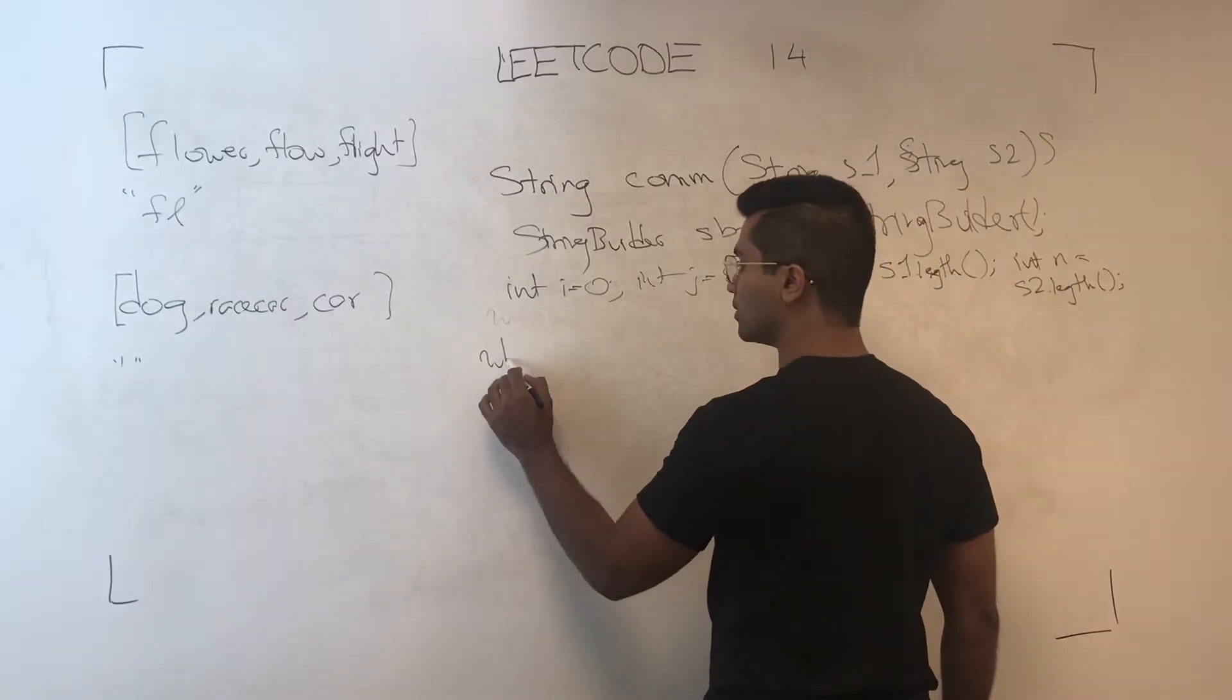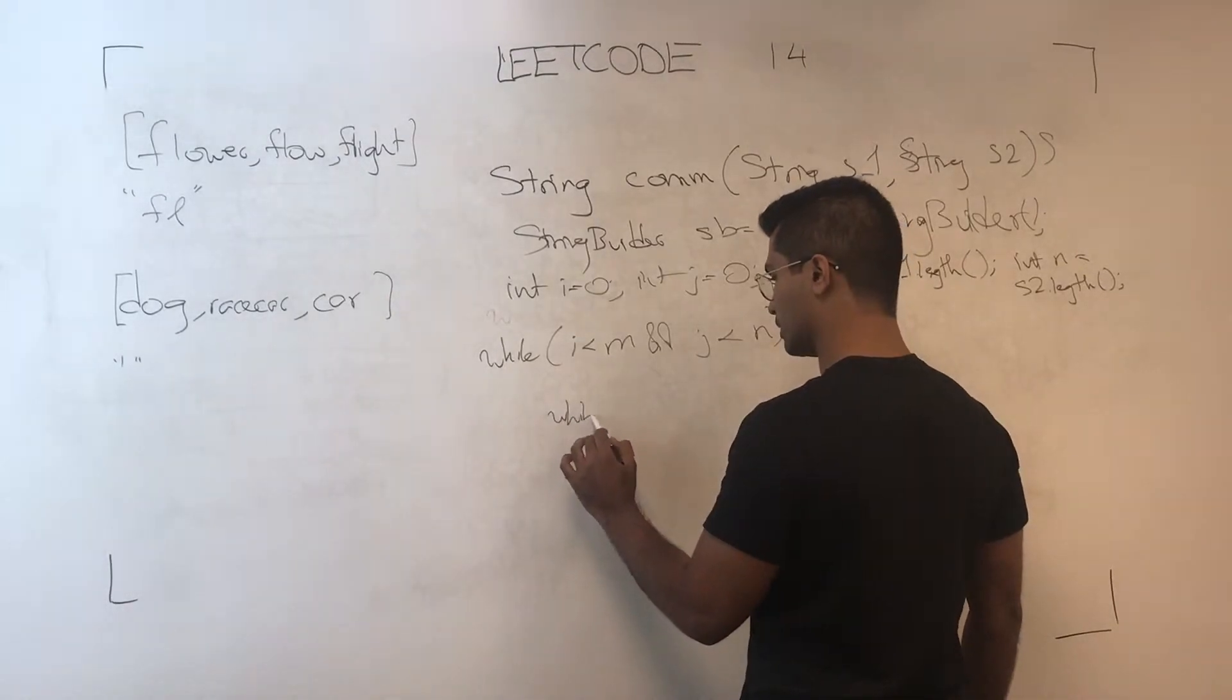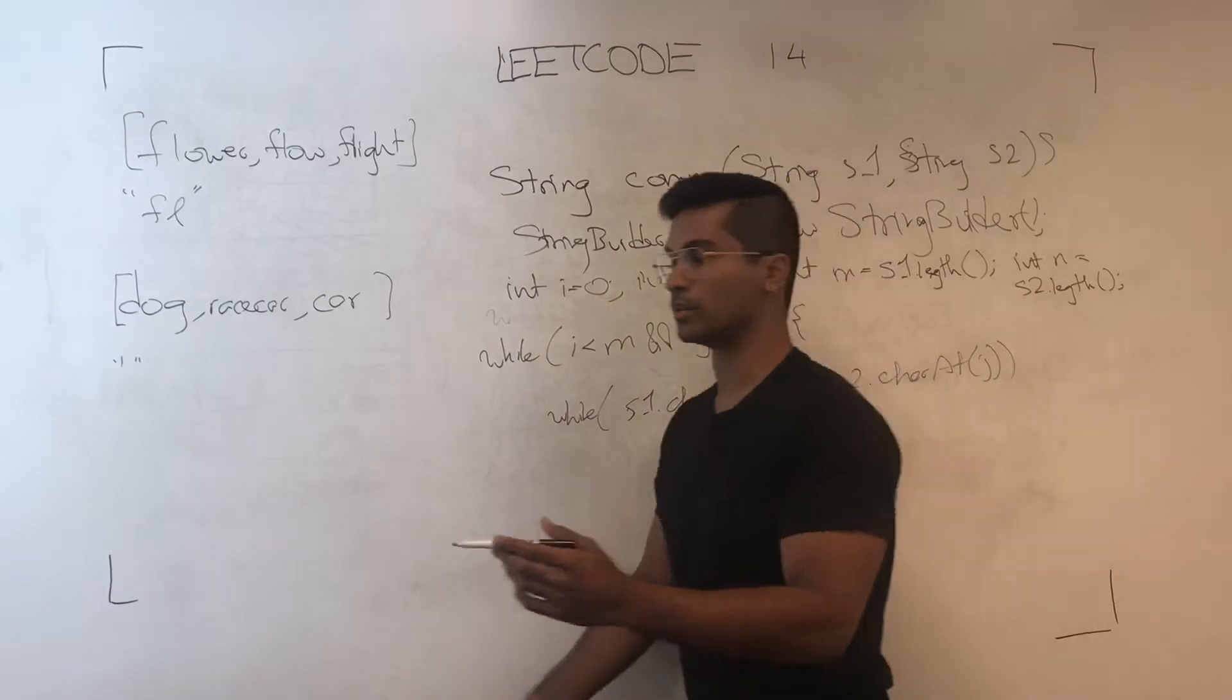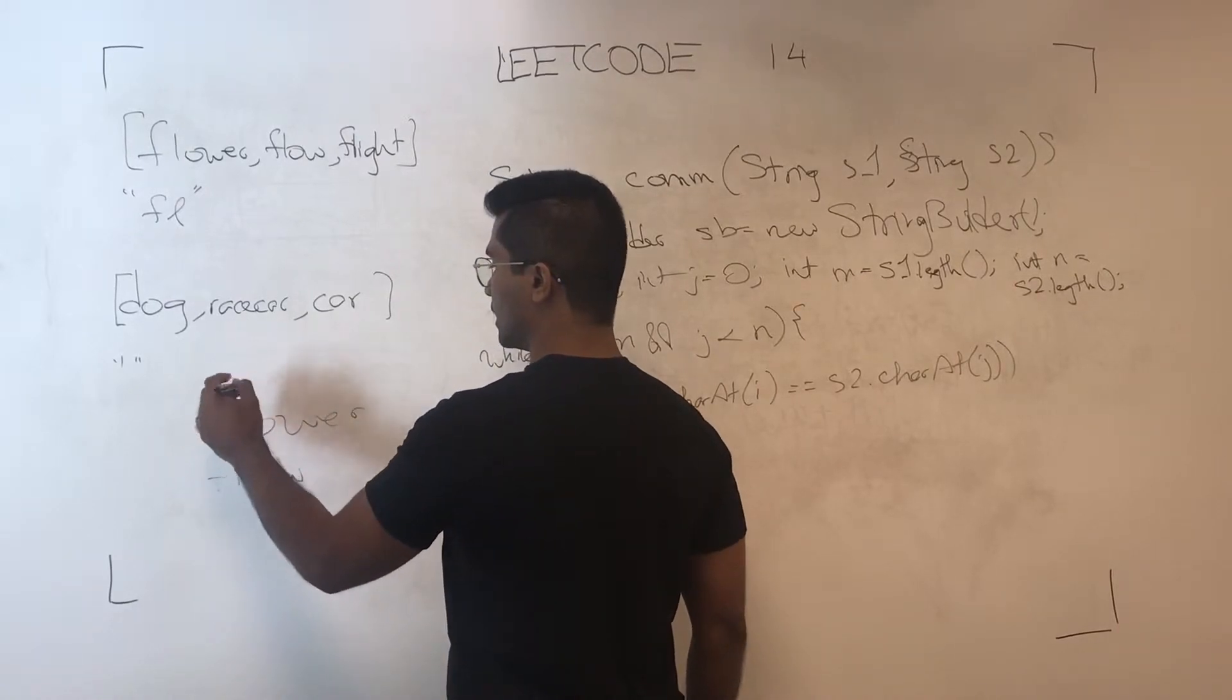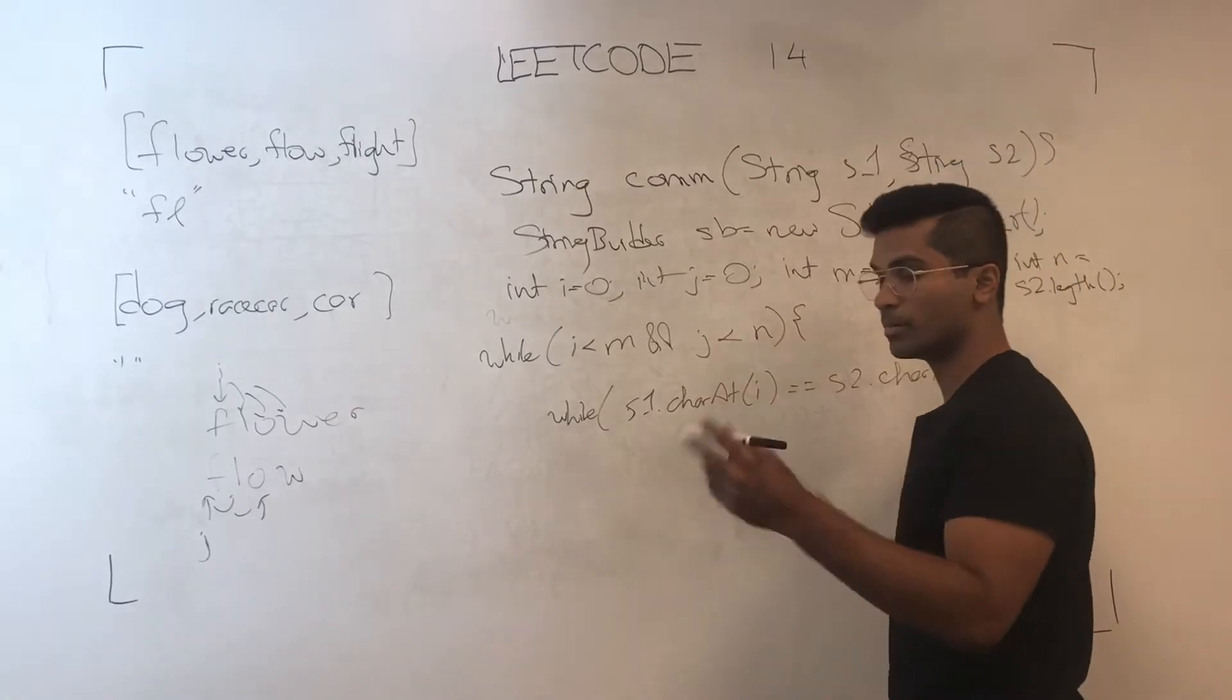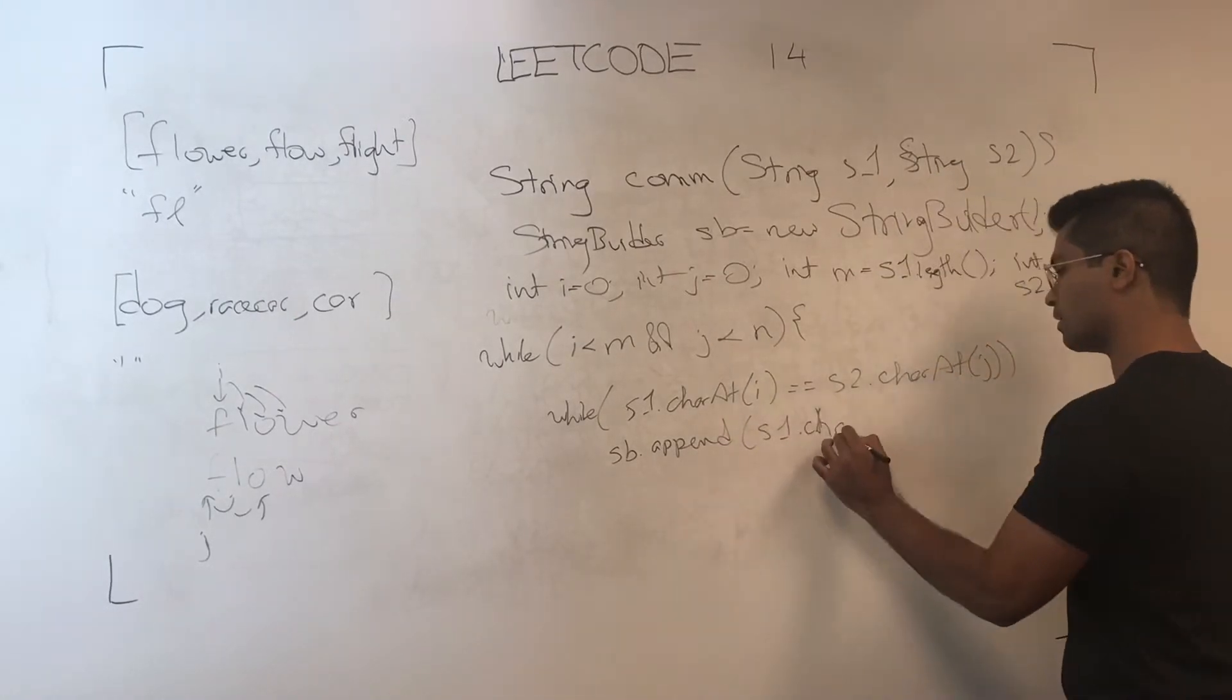So while i is less than m and j is less than n, we're going to do while s1.charAt at i equals s2.charAt at j. Pretty much what this is going to look like is this, flower and flow. So we're going to have pointer i and j, and these are going to keep incrementing every single time that they're equal, and every time they're equal we append sb.